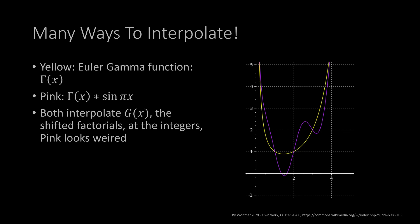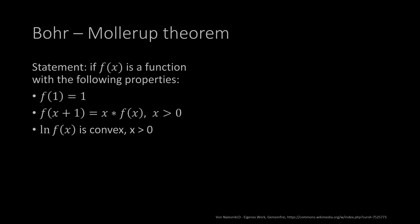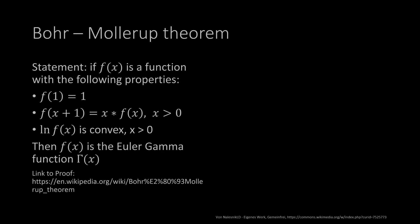That brings us to the Bohr-Mollerup theorem. The statement is: if we have a function f(x) with the properties that f(1) = 1, that f(x+1) = x·f(x) for x > 0, and a third condition that the natural logarithm of the function is convex in the interval x > 0, then f(x) is the Euler gamma function, Γ(x). The link to the proof you can see below.